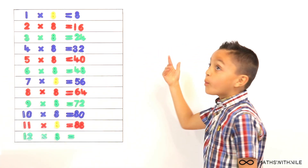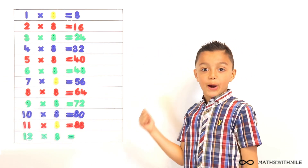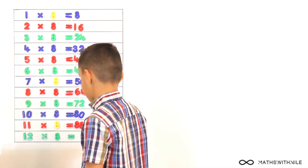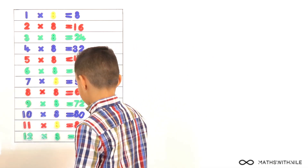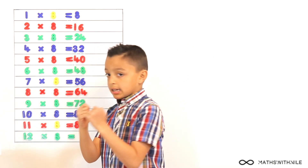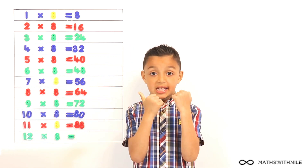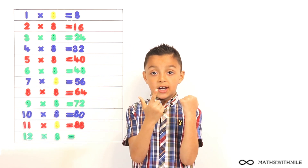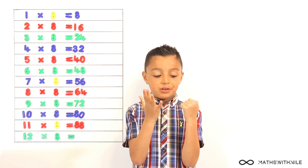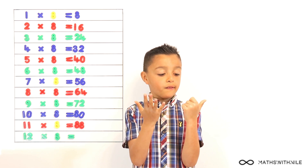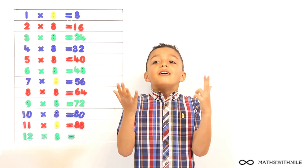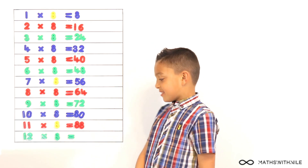Oh, this is a new whiteboard by the way. It is, it's very nice. And then 12 times 8 — can you count on from your last number? 88, 89, 90, 91, 92, 93, 94, 95, 96.